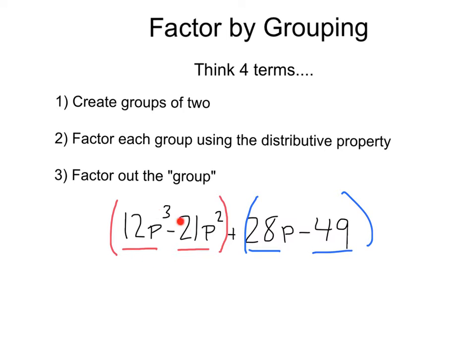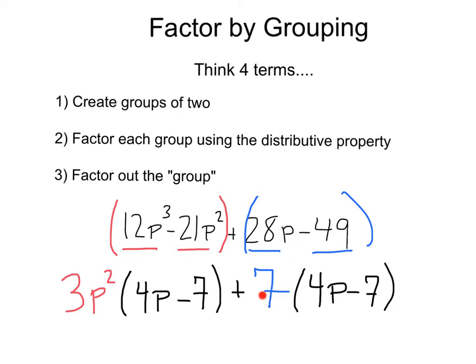Next, we want to take these as separate entities and factor each of them using the distributive property. Looking at this 12p³ and this 21p², I can pull this 3p² out, leaving me with 4p minus 7. Moving on to this 28 and this 49, I can pull this 7 out, leaving me with 4p minus 7.